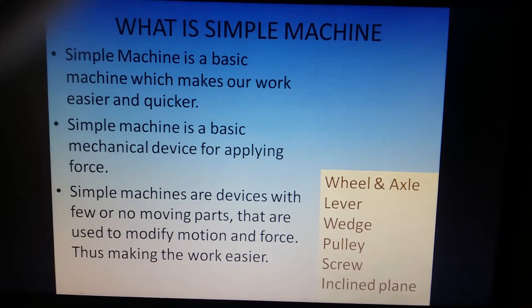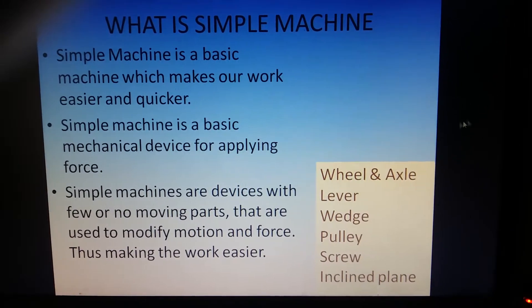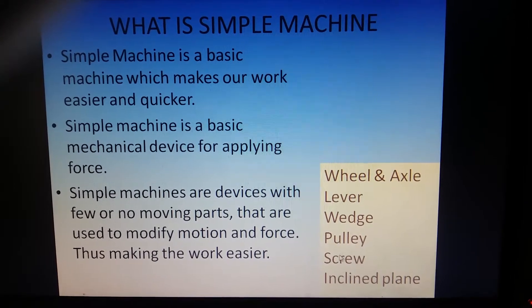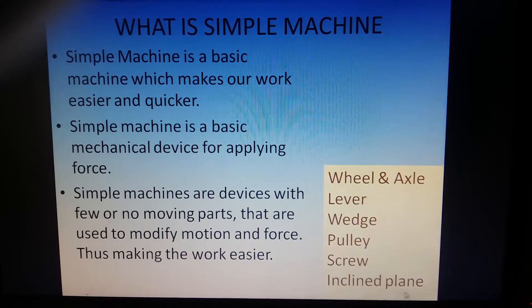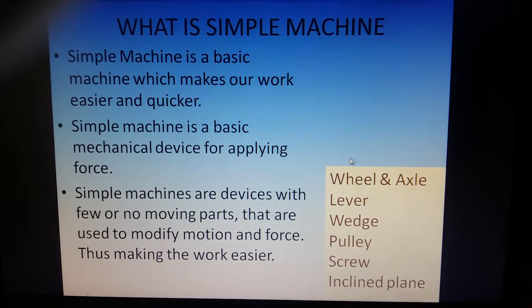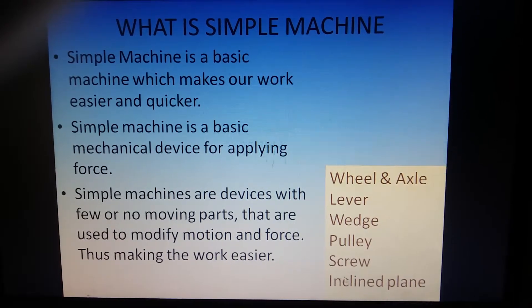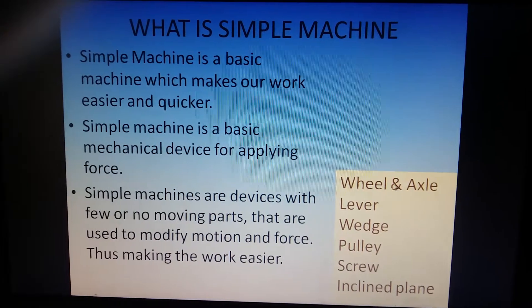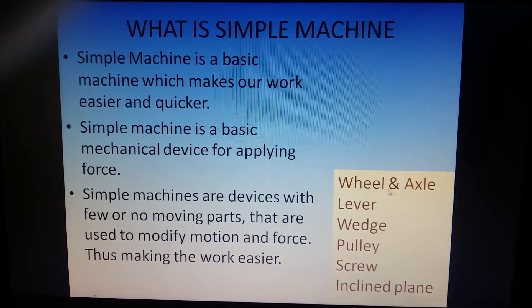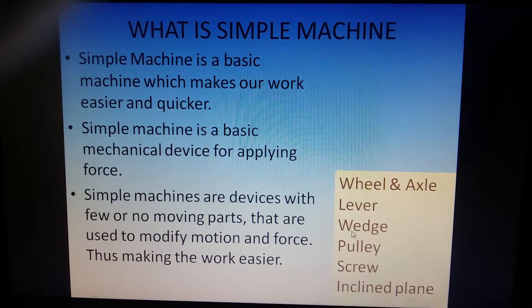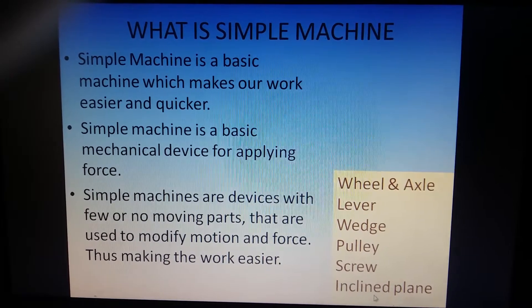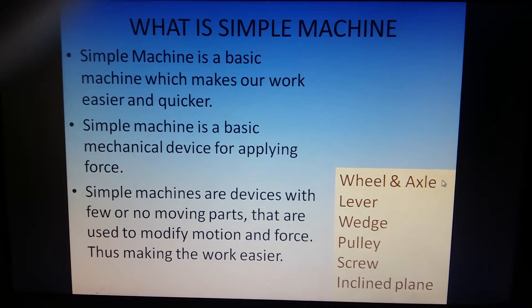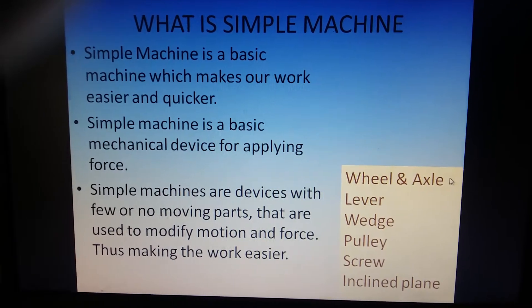We also saw some examples of simple machines: wheel and axle, lever, wedge, pulley, screw, and inclined plane. Now I want you all to go back to your earlier lectures and videos where I have explained the working of each and every simple machine and given their examples and uses. Please go through your lessons once again and revise.